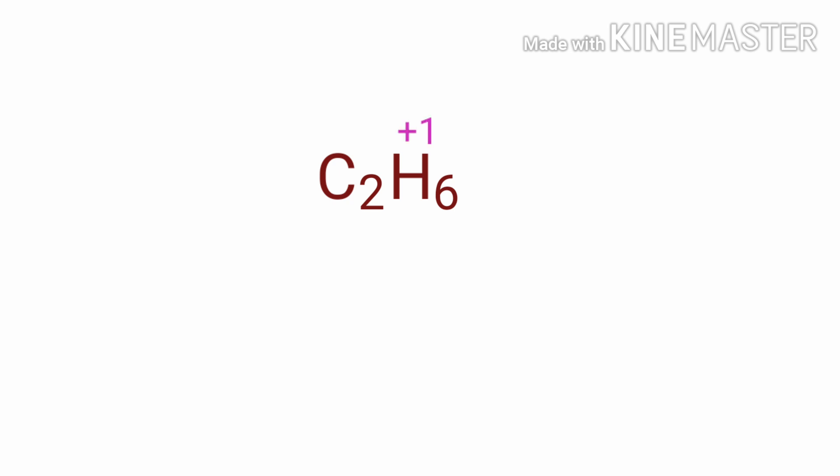We can write the oxidation number of the element above its symbol and the total number of the oxidation number of the atoms below its symbol. As per rule in a neutral compound, the numbers along the bottom must add up to zero.